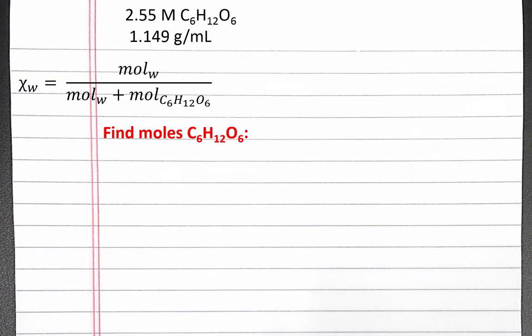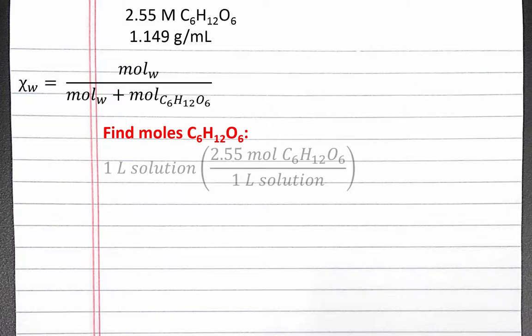First, let's find moles of glucose. We can use dimensional analysis. We assume we're working with one liter of solution. We can convert from liters of solution to moles of solute using the molarity. One liter of solution is 2.55 moles of glucose. This gives us 2.55 moles of glucose.